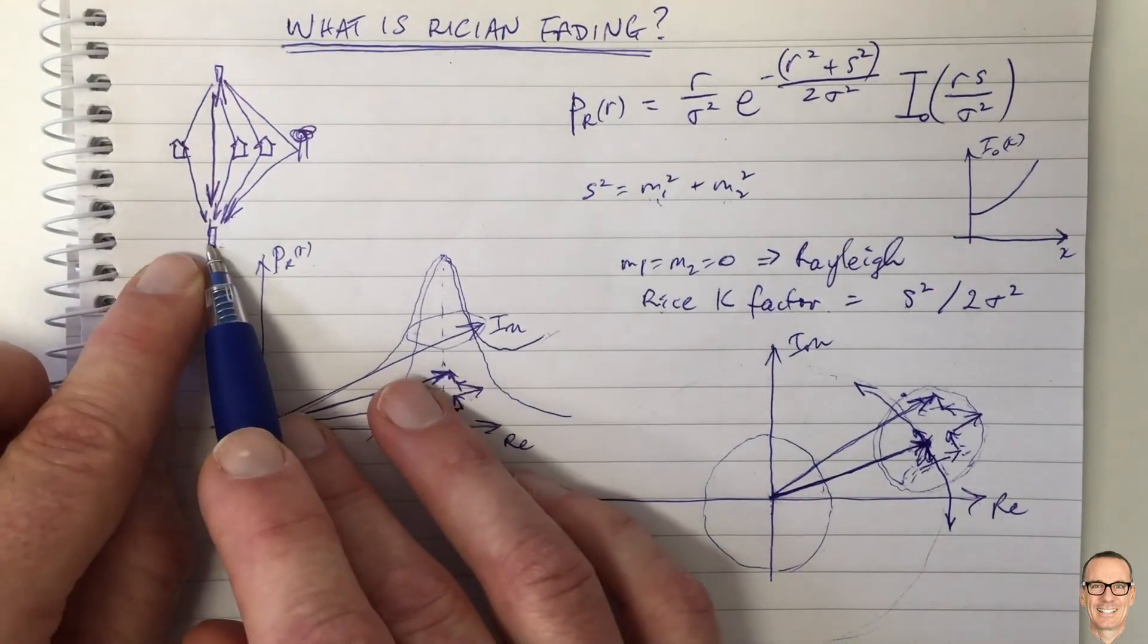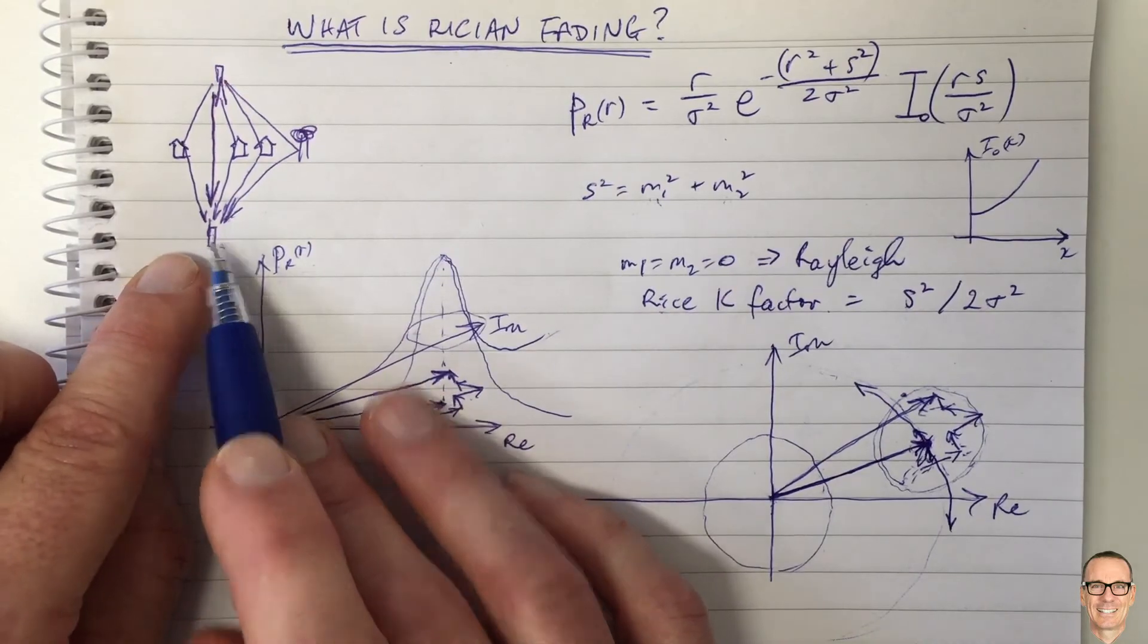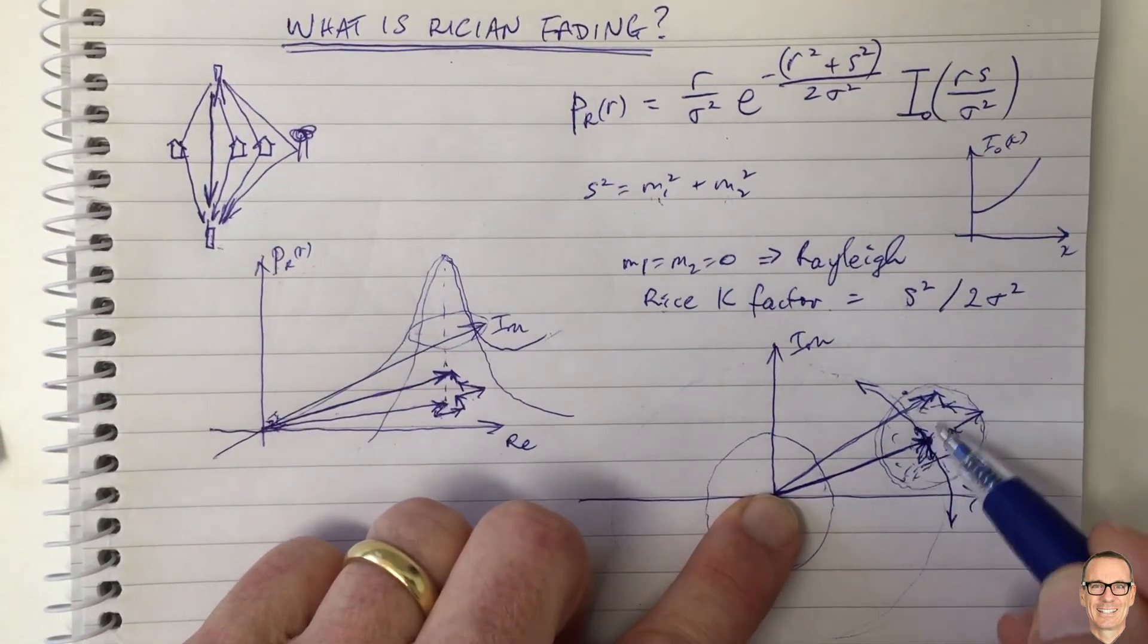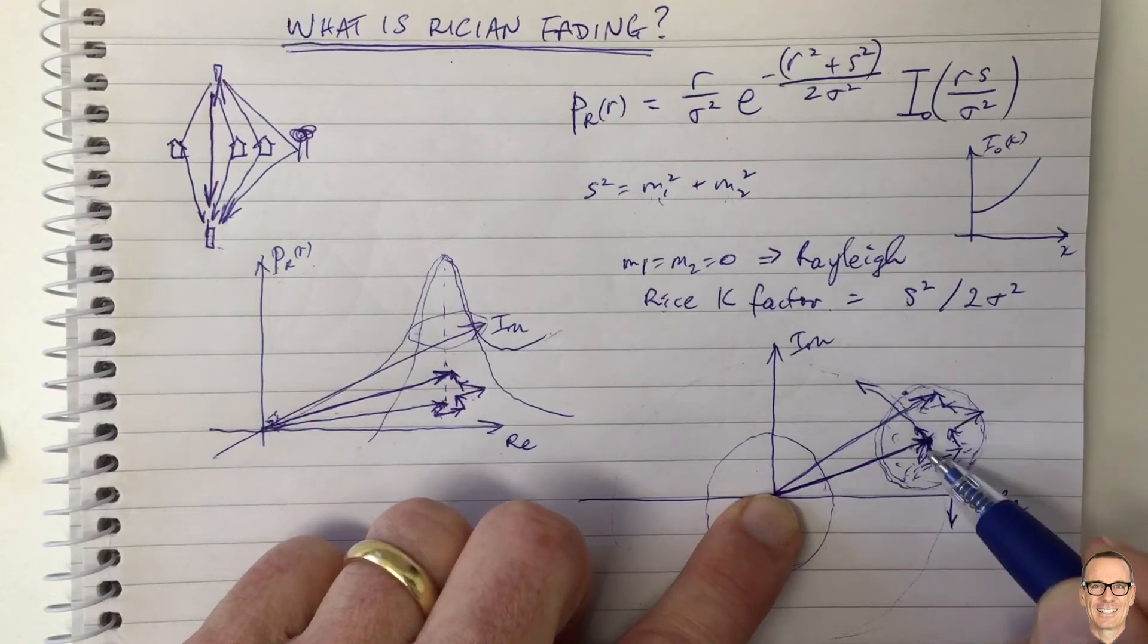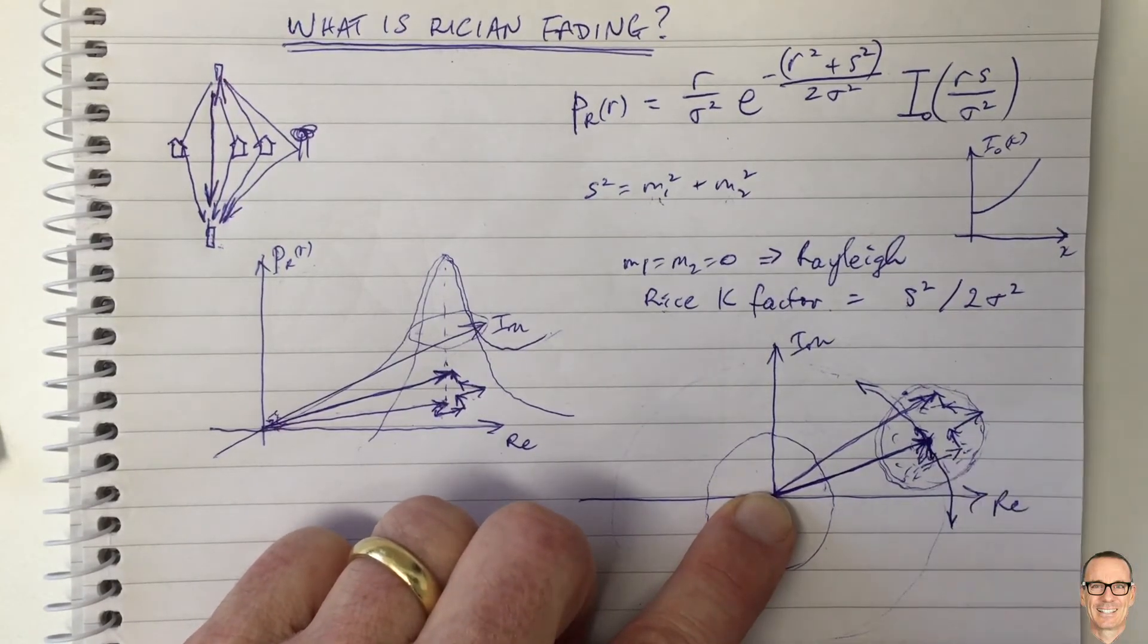But if you stand in one location and you only move small bits around that location, then the phase will tend to stay - all these phases will tend to stay close to the dominant path. And the dominant path won't change very much. So this is the difference